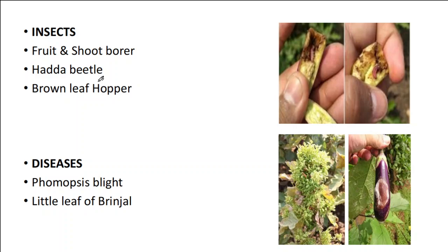Epilachna vigintioctopunctata, belonging to the family Coccinellidae, is the Hadda beetle. The brown leafhopper is the vector for little leaf of Brinjol — in the picture you can see the damage caused by this disease. The brown leafhopper, scientifically known as Cestius phycitis, is the vector responsible for causing little leaf of Brinjol. Phomopsis blight is another important disease, and here in the picture you can see how the damage is created on the entire vegetable.